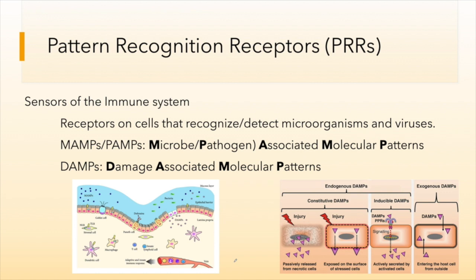Hello and welcome to part 5 of innate immunology. In this lecture, we will be talking about pattern recognition receptors. These are the sensor systems in the second line of defenses found in the innate immune system. These are cellular receptors, and there are three different classes we're going to discuss. They are a very important part of the bridge between the innate and the adaptive immune system.